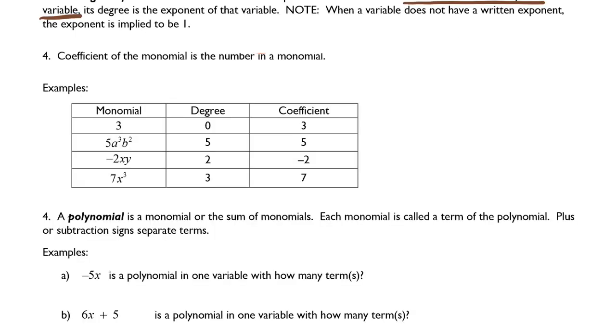The next thing we need to learn is something called a coefficient of the monomial. Coefficient is the number in a monomial. So if we have the monomial 3, the degree is 0 and the coefficient is 3.